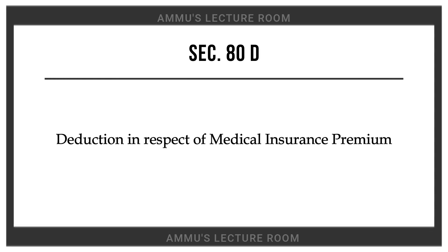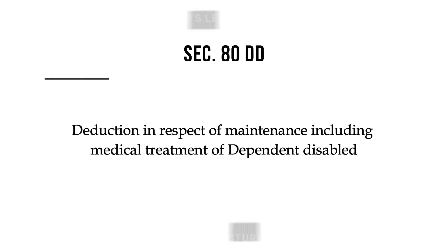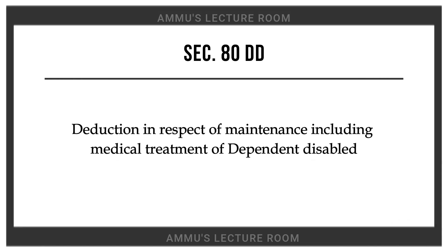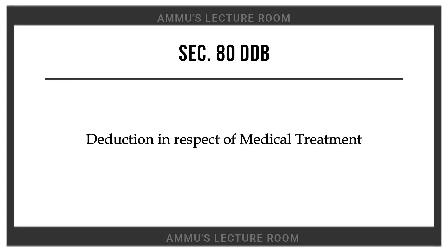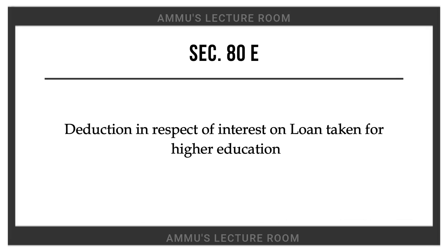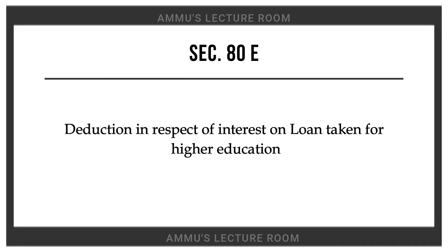Section 80D: deduction in respect of medical insurance premium. Section 80DD: deduction in respect of maintenance including medical treatment of disabled dependent. Section 80DDB: deduction in respect of medical treatment. Section 80E: deduction in respect of interest on loan taken for higher education.